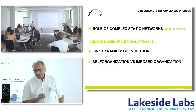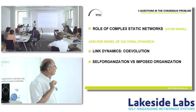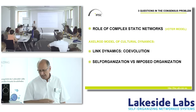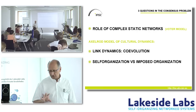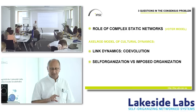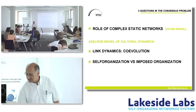In terms of questions I want to address three things. One is the role of the network in consensus, using the imitation model. Second is the dynamics of the network — the fact that ties are not persistent. And at the end, a few words on the competition between self-organization and imposed organization by some external agency.